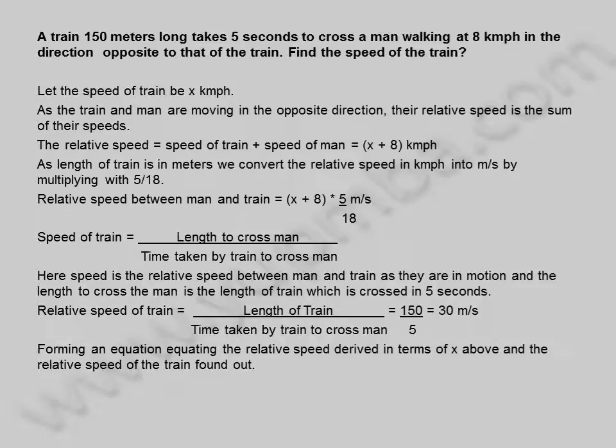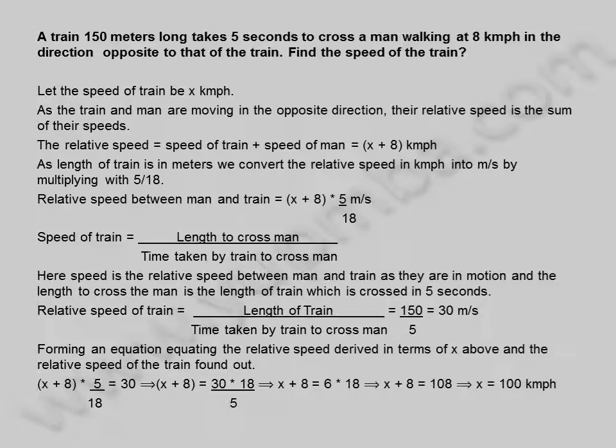Forming an equation equating the relative speed derived in terms of x above and the relative speed of the train found out: x plus 8 into 5 divided by 18 is equal to 30. This implies x plus 8 is equal to 30 into 18 divided by 5, which gives x plus 8 equal to 108. Therefore x is equal to 100 kilometers per hour. The speed of the train is 100 kilometers per hour.